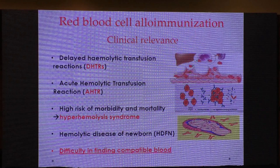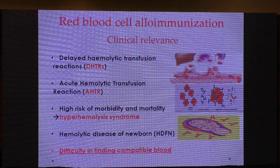There is a condition called hyper hemolysis syndrome. In this syndrome, after a patient receives a blood transfusion, the hemoglobin level post-transfusion is actually lower than pre-transfusion. This means not only is there hemolysis of the transfused red cells, but also hemolysis of the patient's own red cells.